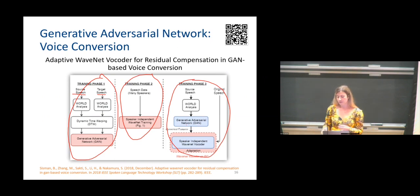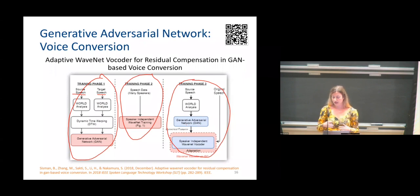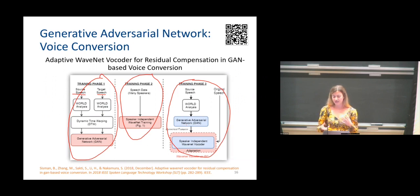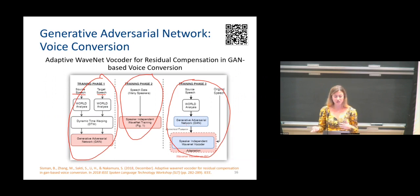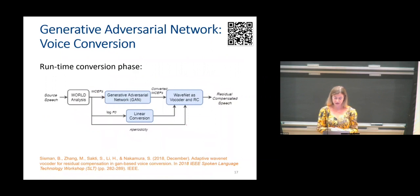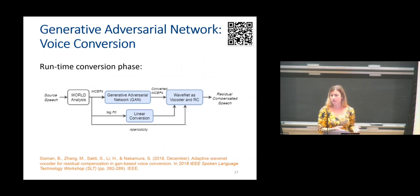Hypothetically, the WaveNet vocoder should work for everyone, but in practice it really doesn't work for everyone. So you generally need some fine-tuning and adaptation to make it work for a particular target speaker. In training phase three, we obtain the converted features with the trained GAN — blue means already-trained networks, pink means training. Then we do adaptation to the WaveNet vocoder. This was popular a couple of years ago, and you can do it with very limited training data, which is the key trick for voice conversion. If you have lots of data, you would train a TTS instead.